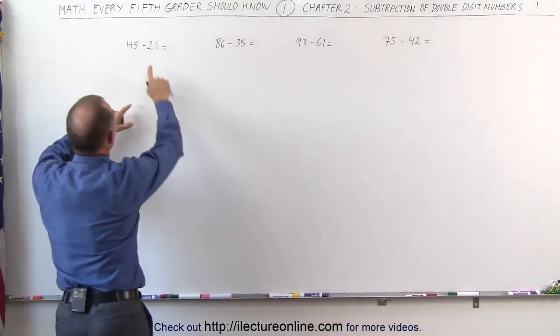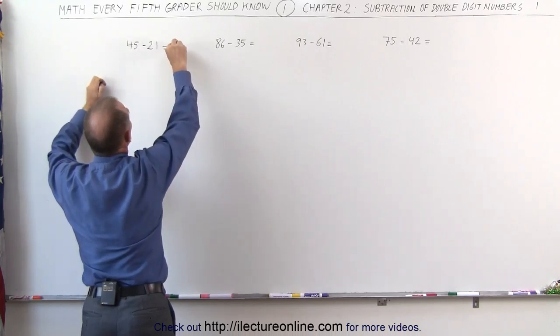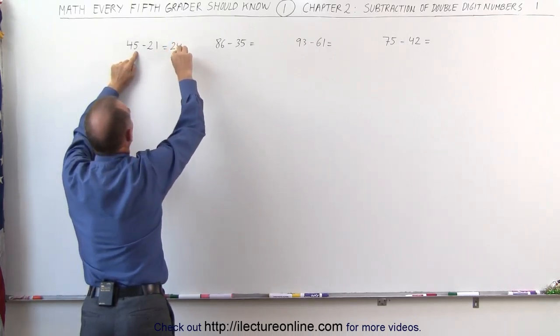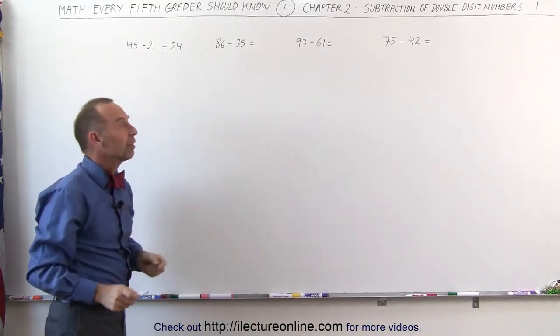What we do is we subtract the 2 from the 4, which gives us 2, and we subtract the 1 from the 5, which gives us 4. 45 minus 21 is 24.